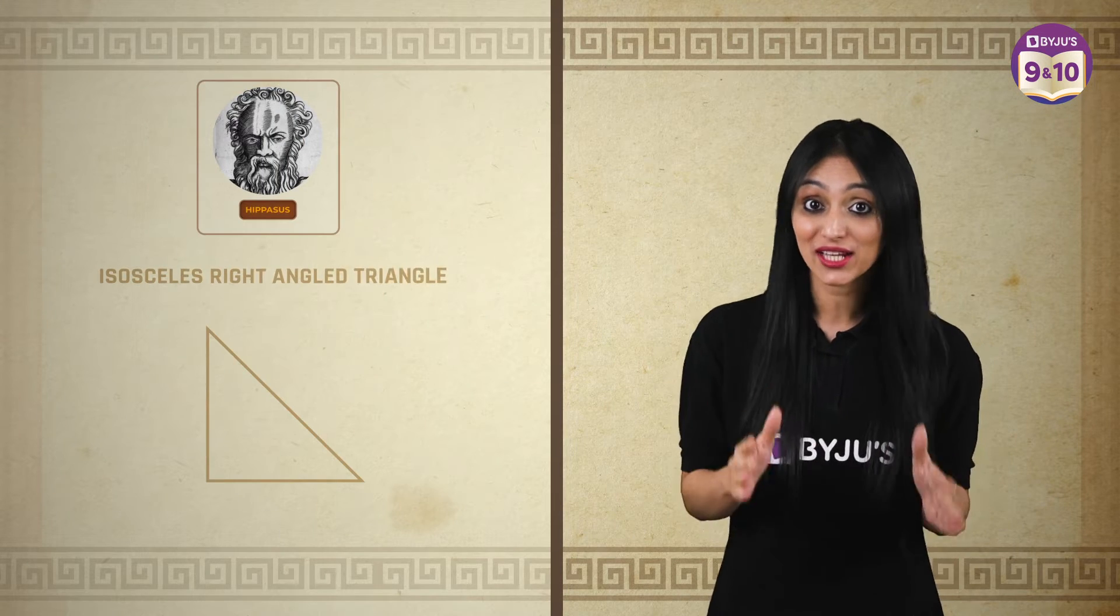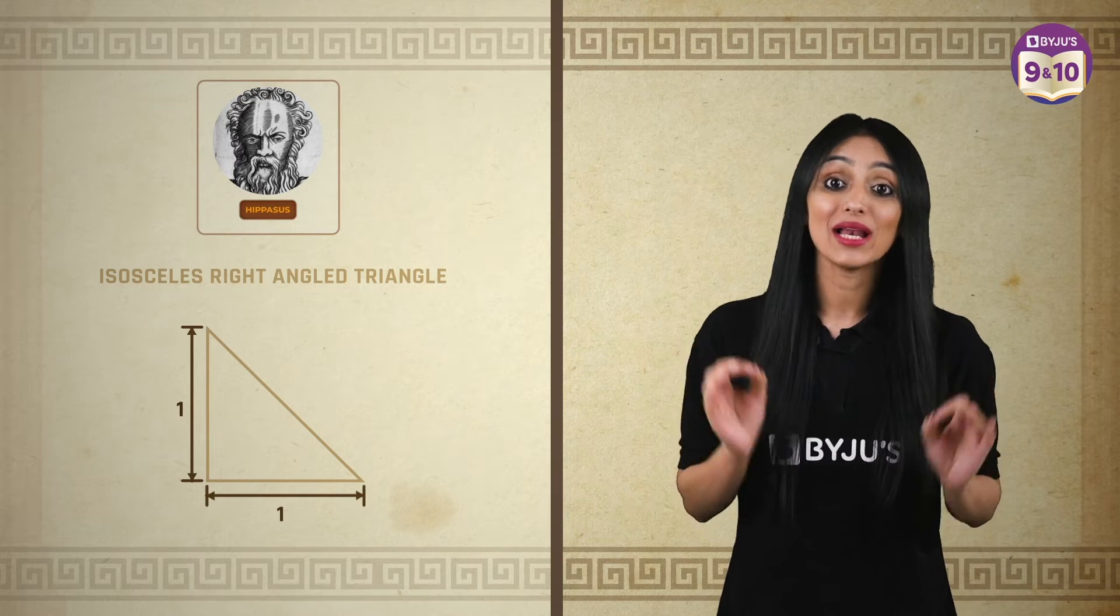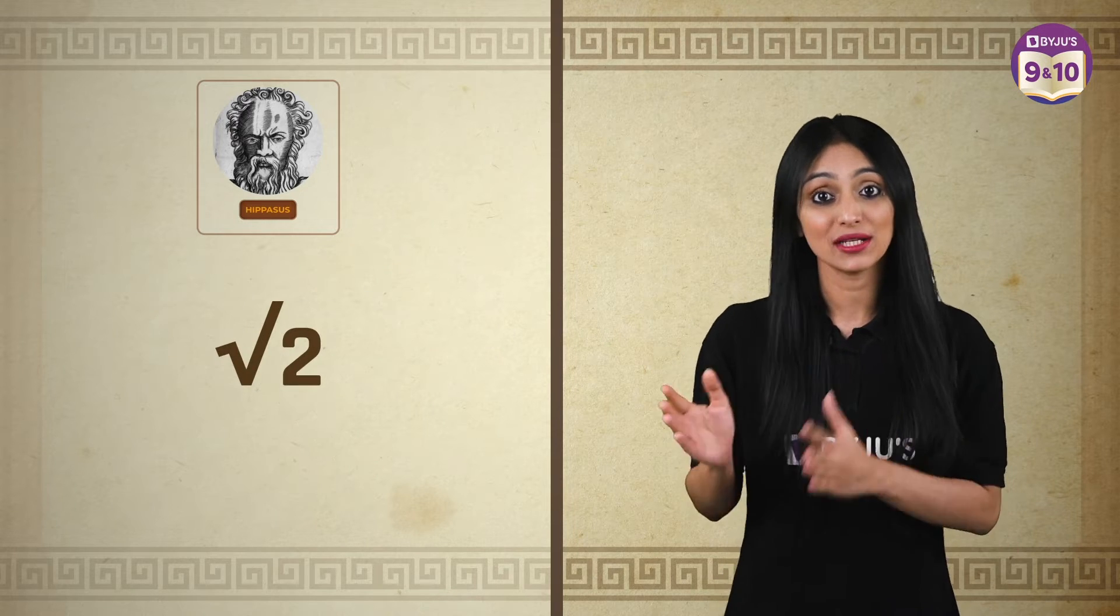In the 5th century BC, while working on a separate problem, Hippasus is said to have stumbled on the fact that an isosceles right triangle, whose two base sides are one unit in length, will have a hypotenuse that is root 2, which is an irrational number.